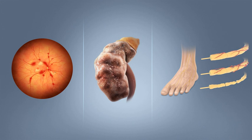Type 2 diabetes is primarily due to lifestyle factors and genetics. A number of lifestyle factors are known to be important to the development of type 2 diabetes, including obesity (defined by a body mass index of greater than 30), lack of physical activity, poor diet, stress, and urbanization. Excess body fat is associated with 30% of cases in those of Chinese and Japanese descent, 60-80% of cases in those of European and African descent, and 100% of Pima Indians and Pacific Islanders. Dietary factors also influence the risk, with consumption of sugar-sweetened drinks, saturated fat, trans fats, and white rice all associated with increased risk. A lack of physical activity is believed to cause 7% of cases.